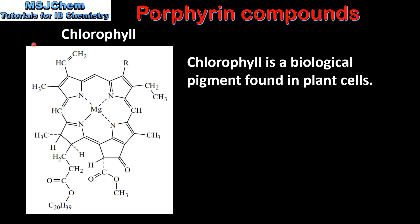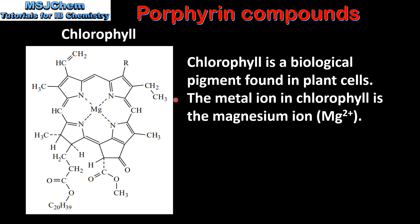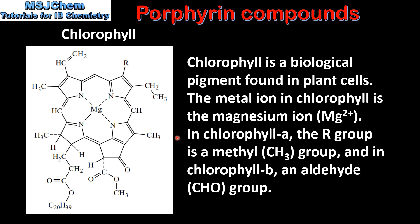Next we look at chlorophyll. Chlorophyll is a biological pigment found in plant cells. The metal ion in chlorophyll is the magnesium 2+ ion. In chlorophyll A the R group is a methyl group, and in chlorophyll B an aldehyde group.